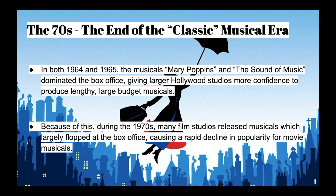In the 1970s, this was the end of the classic musical era. There were tons of great musicals for a long period of time — back in the 1930s, 40s, 50s, and into the 60s they released both Mary Poppins and The Sound of Music. Both dominated the box office and are still big hits today, giving Hollywood studios more confidence to produce lengthy, large-budget musicals.